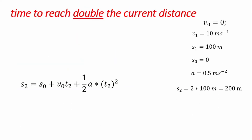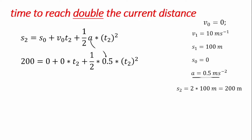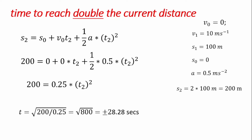Working with the second formula, which is the most suitable, we input all our variables: x2 is 200 (the new distance), x0 is 0, V0 is 0 since the vehicle was initially at rest, and acceleration is the constant 0.5 m/s². Having input all this into the equation and simplifying, we get our time T2 to be 28.28 seconds. This is the time it will take for the vehicle to reach a distance of 200 meters, which is double the current distance given in the problem.